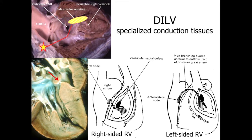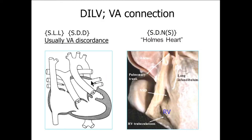The safety zone for resection is identified based on the conduction tissue course. The VA connection is usually discordant, but very rarely some hearts with DILV have VA concordance — RV to pulmonary artery connection — so-called Holmes' heart.